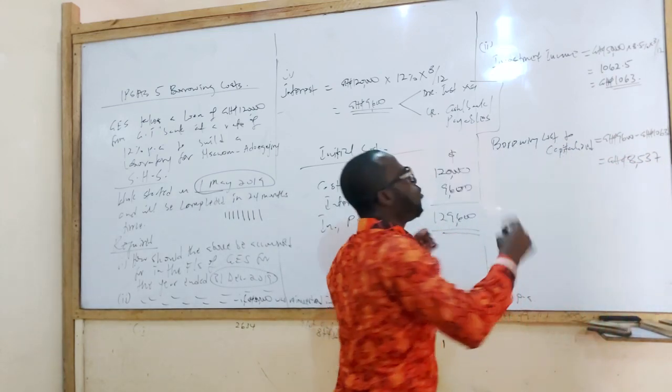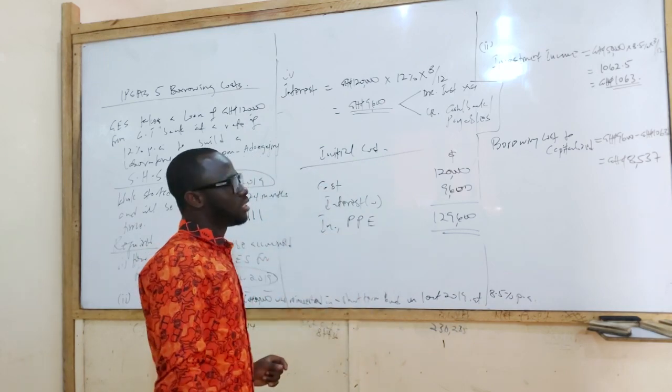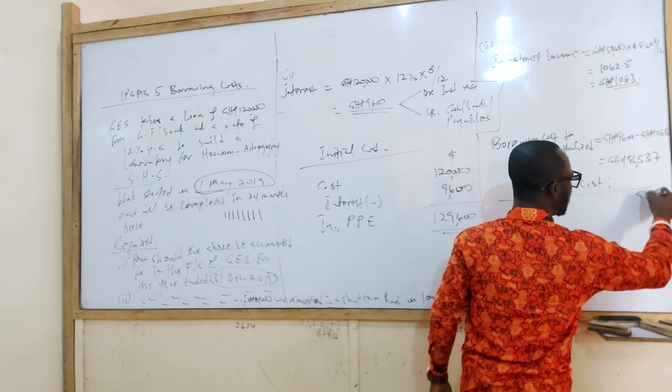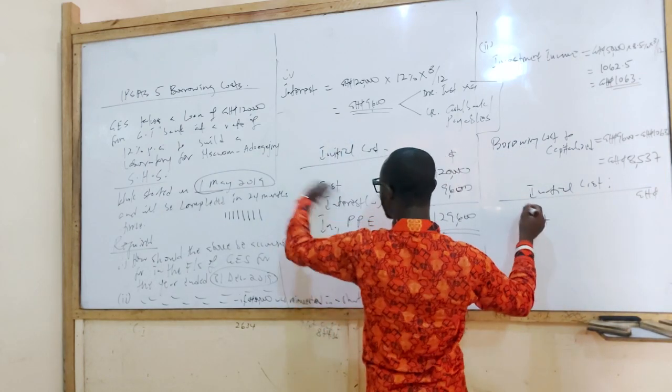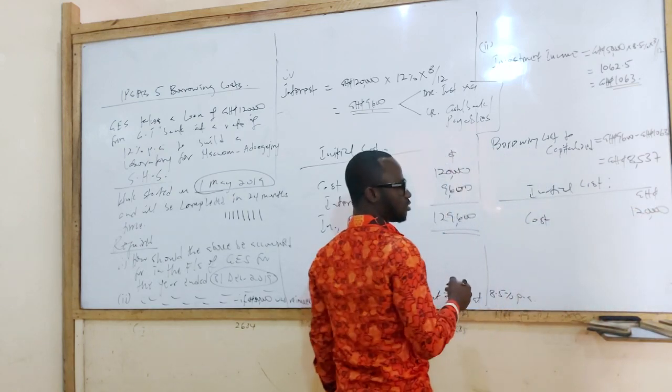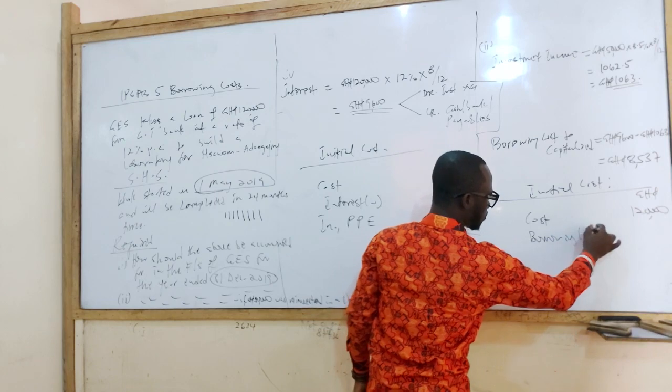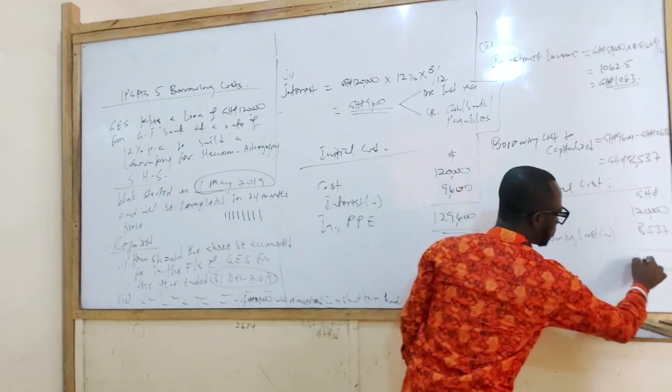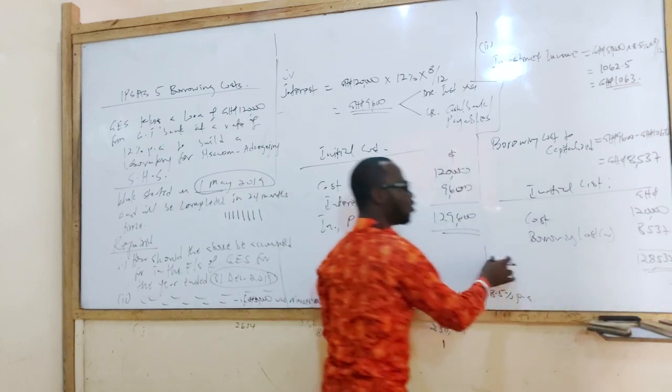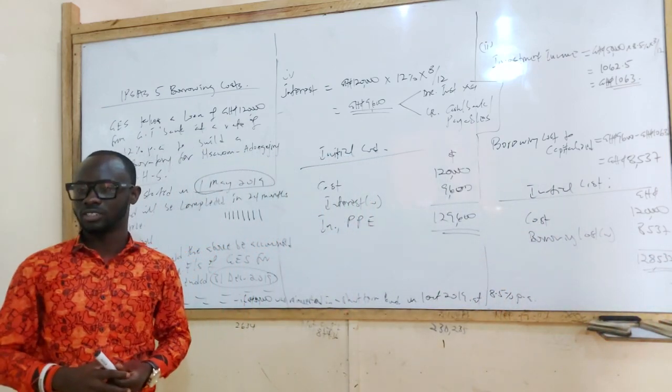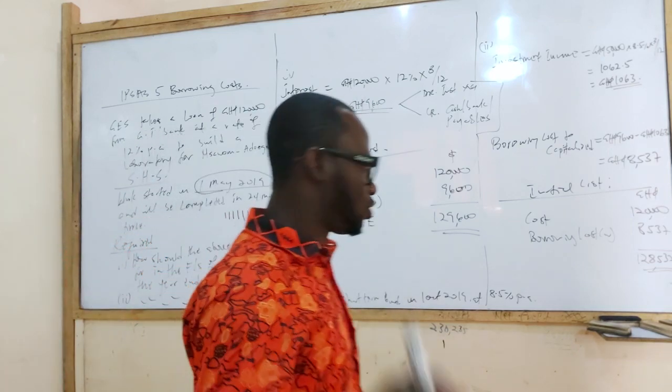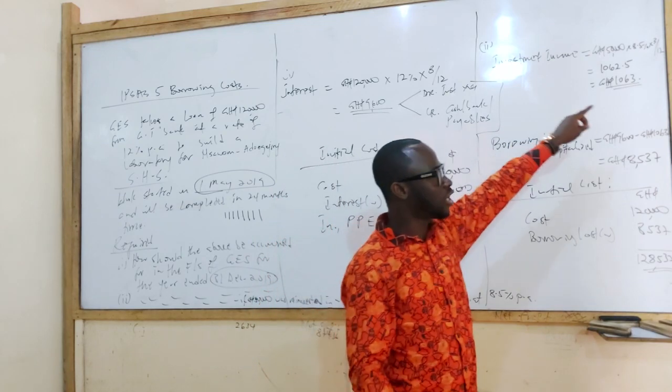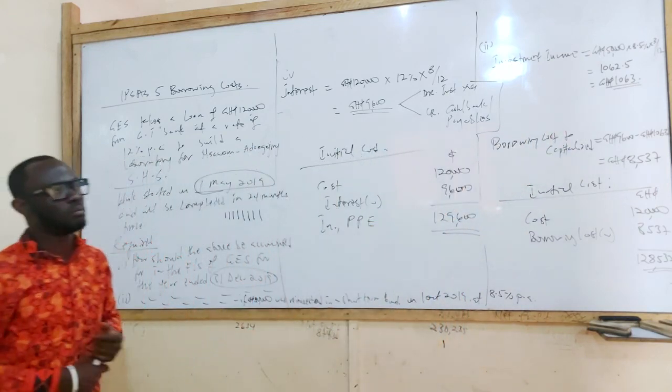So what will be the initial cost of the assets in the statement of financial position for Ghana education service? Simple. So our initial cost in the second scenario is going to be what? The cost of the building still at 120,000. And then what? We bring the borrowing cost from our workings here, 8,537. What do we have now? 128,537. That will go to the infrastructure, property, plant, and equipment. Does that make sense? So that is it about that. So that is what those two statements we made there means. So if there is no reinvestment, it's cheap. But if there is an investment, then you have to subtract the income you received from the amount you are going to be capitalizing.